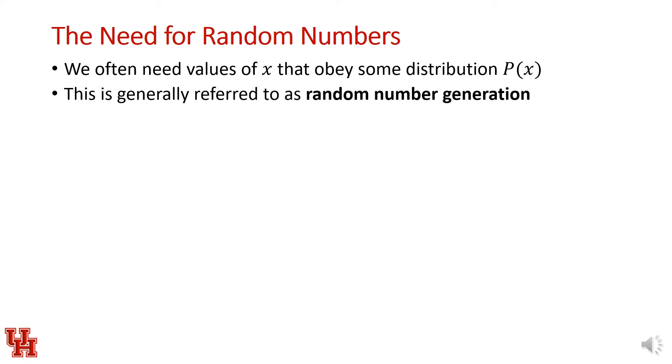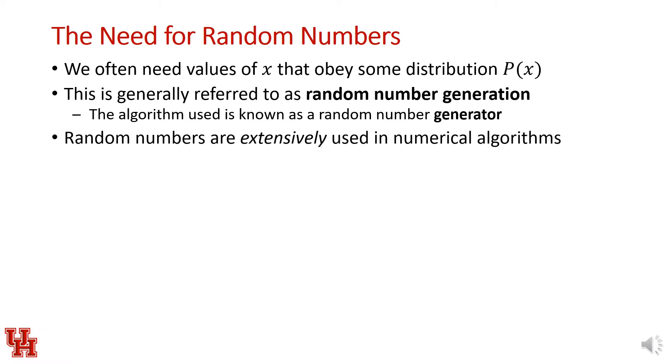Random numbers are used quite often in computational methods. We often need some value of x that obeys a distribution associated with some probability density function. This is generally referred to as random number generation, and the algorithm that we use for generating random numbers is referred to as a random number generator.